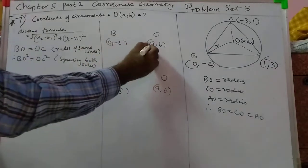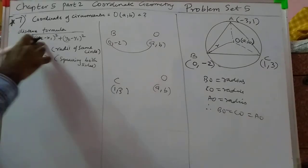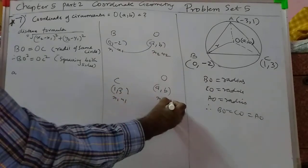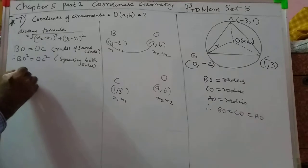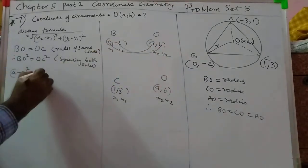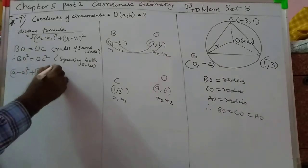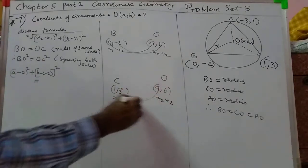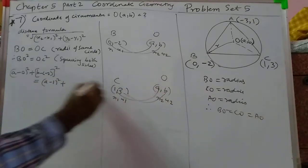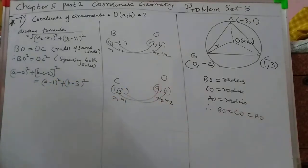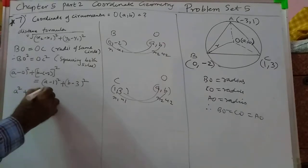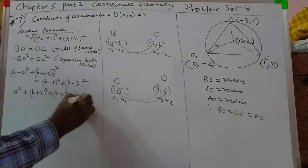Applying the distance formula: A minus 0, the whole square, plus B minus of minus 2, the whole square, equals A minus 1, the whole square, plus B minus 3, the whole square. This becomes A² + (B + 2)² = (A − 1)² + (B − 3)².